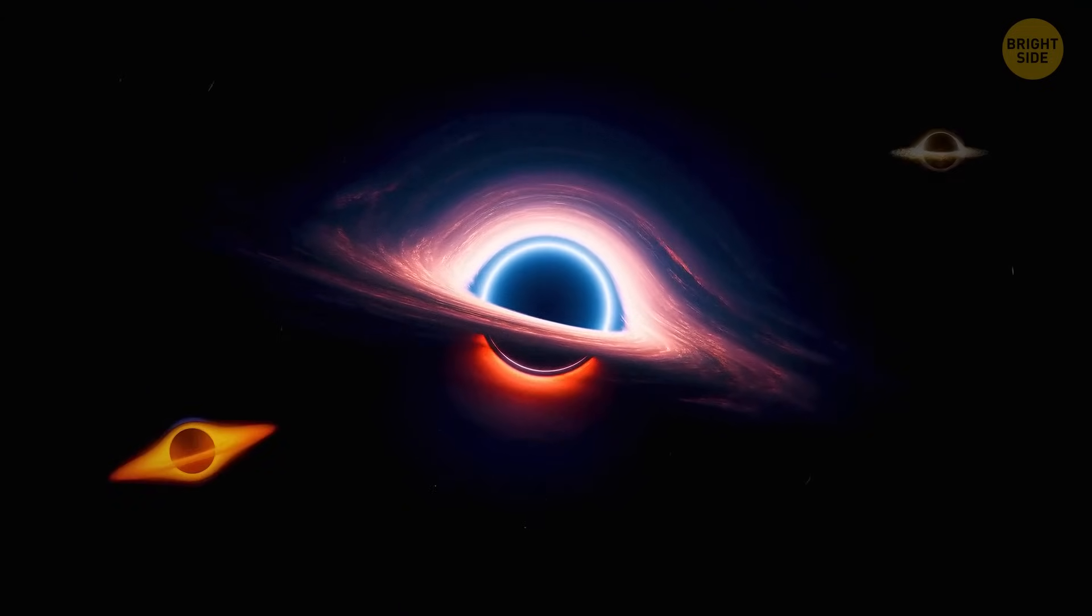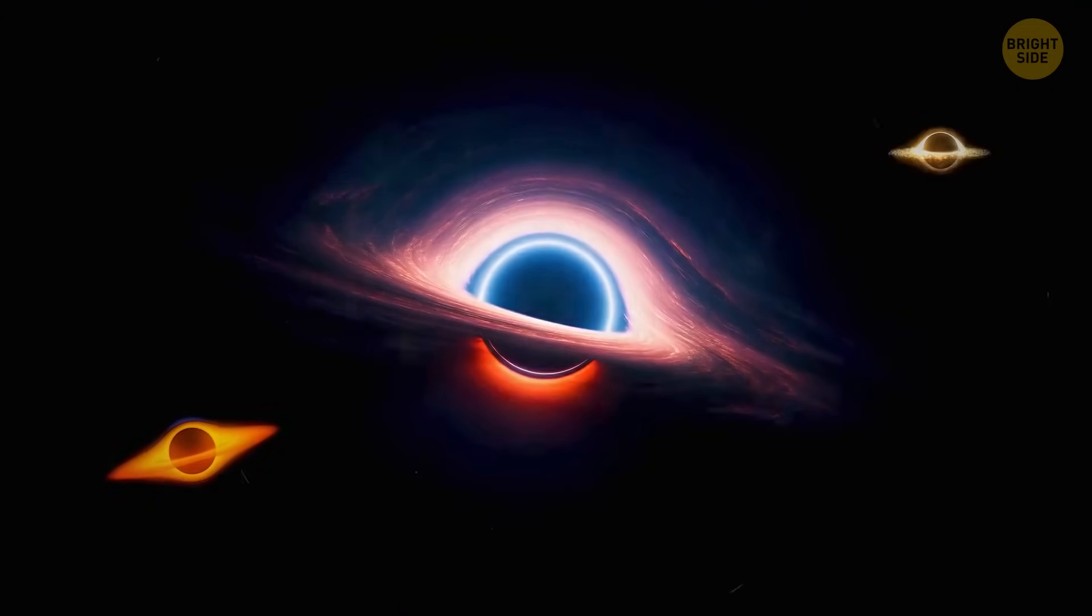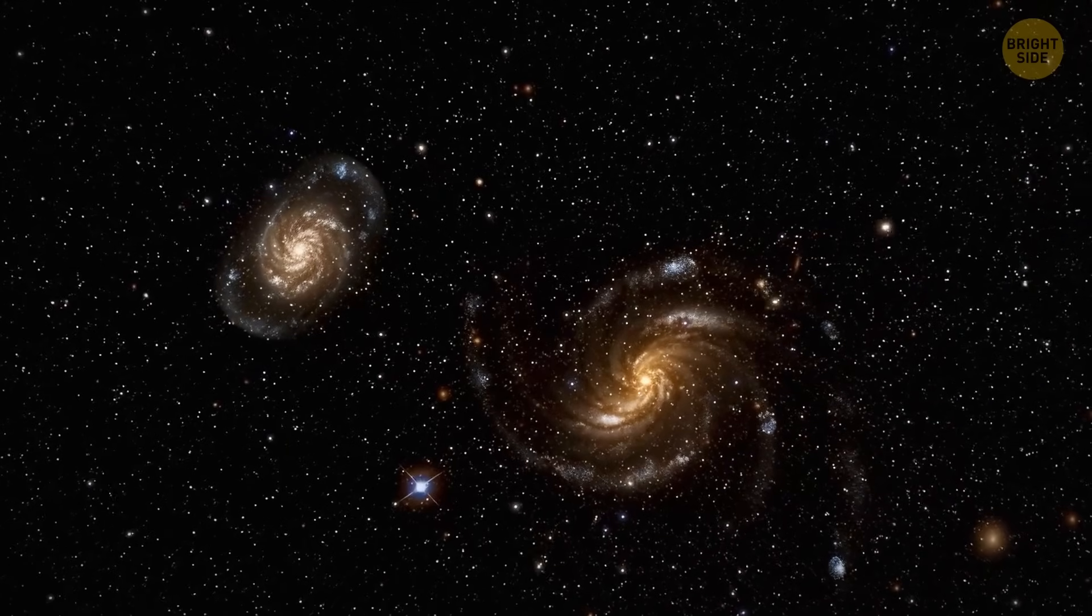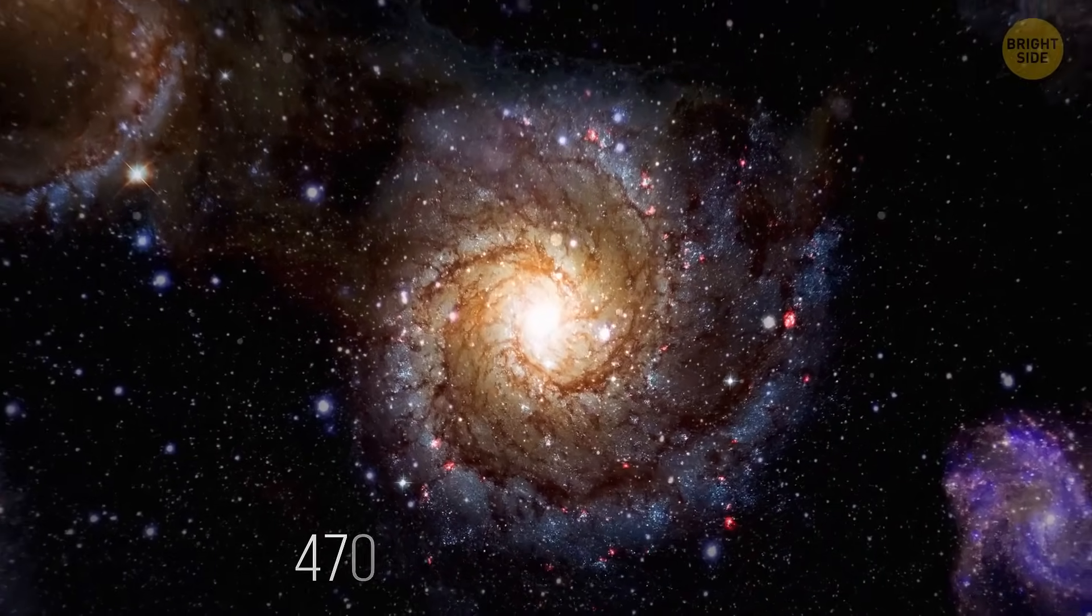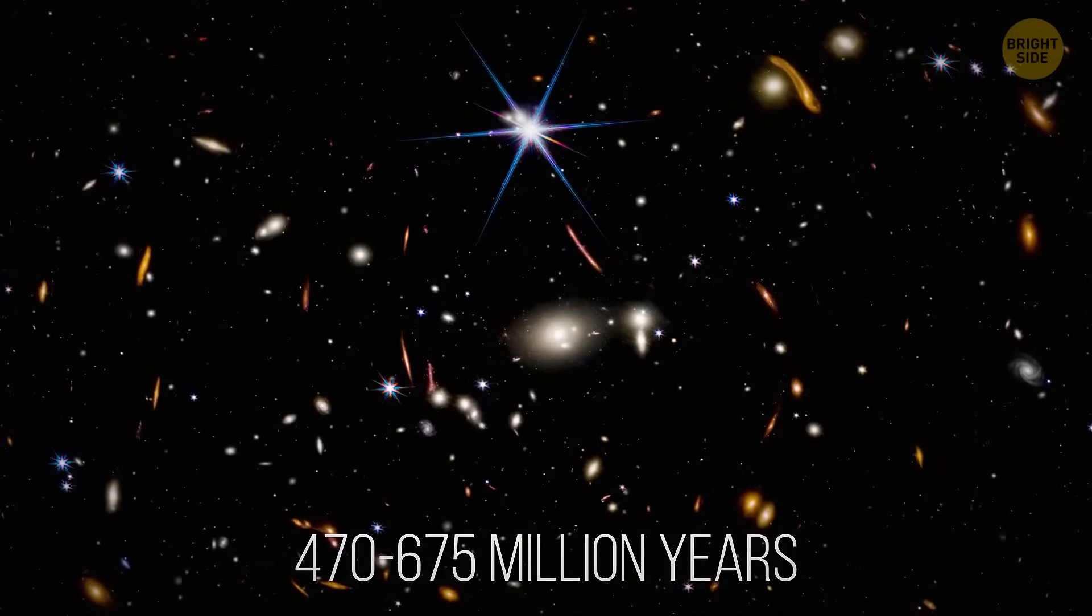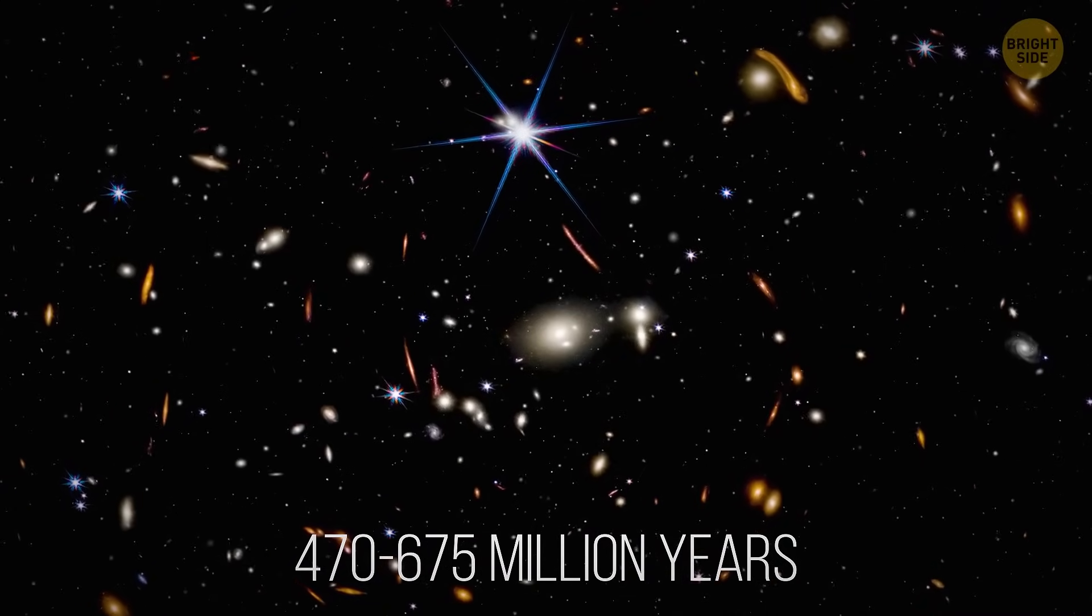Besides the super-old black hole, scientists spotted two other ones. Those probably appeared 1 and 1.1 billion years after the Big Bang. They also discovered 11 ancient galaxies that existed between 470 and 675 million years after the beginning of cosmic history.